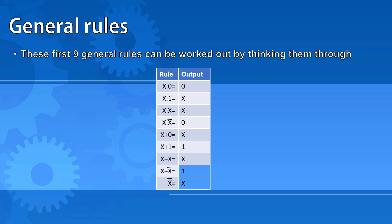x OR NOT x means that it's going to be a zero for one of them and a one for the other, so there will always be at least one, so it will always output one. Finally, NOT NOT x is the same as just saying x.